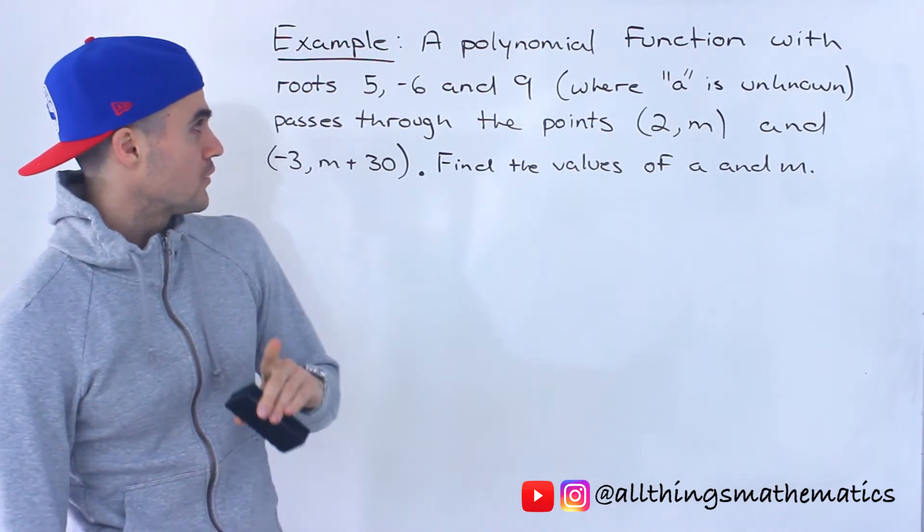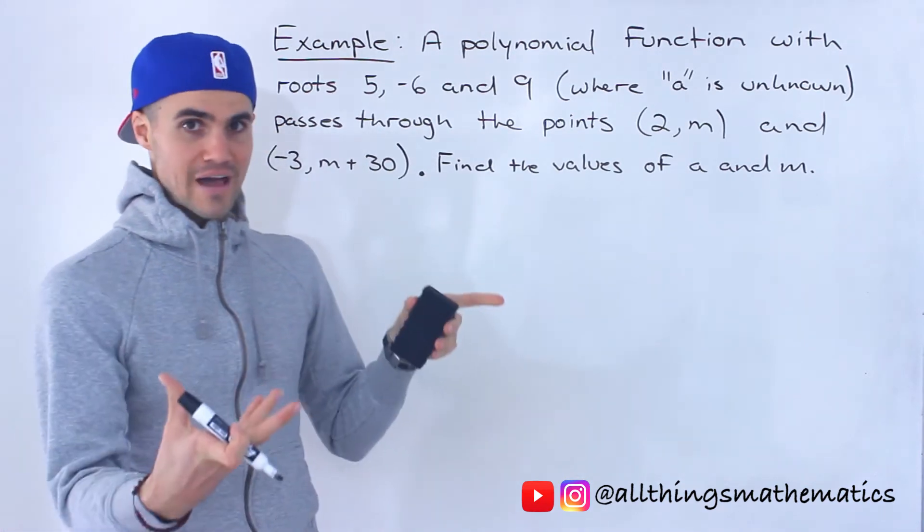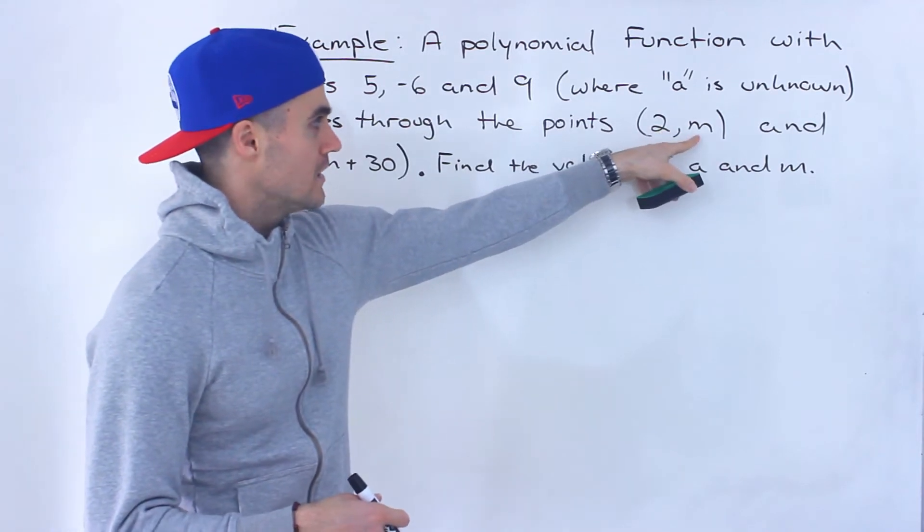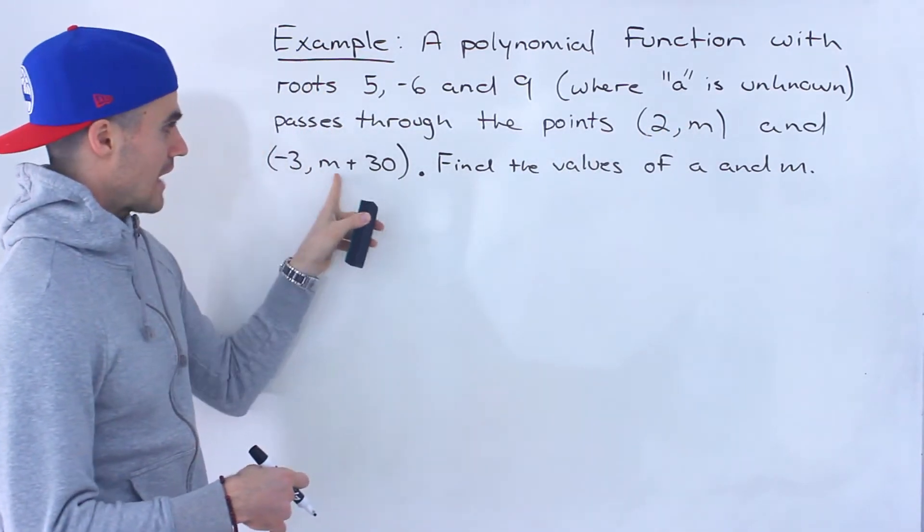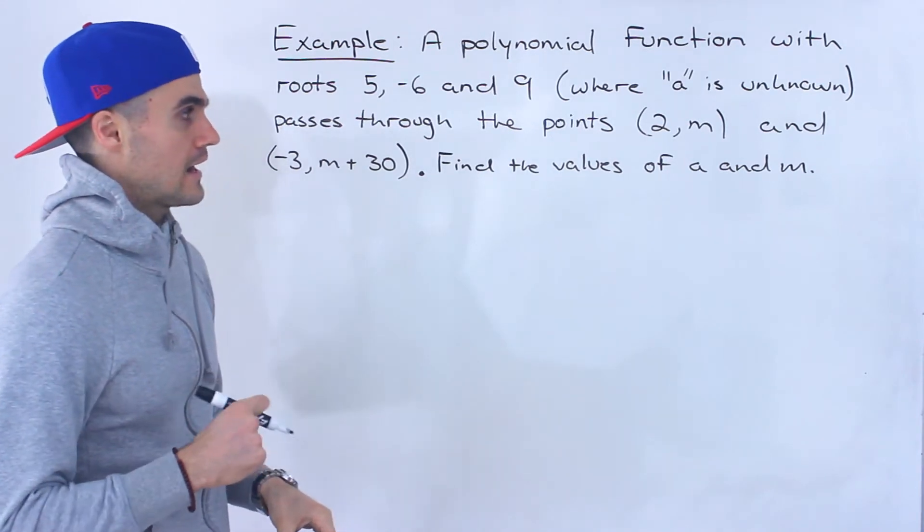So a polynomial function with roots 5, negative 6, and 9, where the A value is unknown, passes through the points (2, M) and negative 3 and M plus 30. And we have to find the values of both A and M.